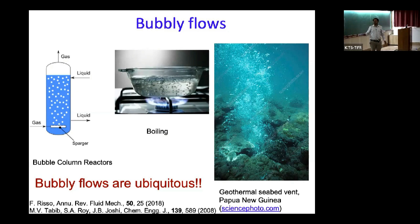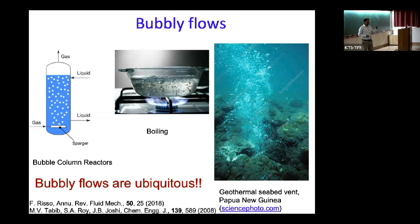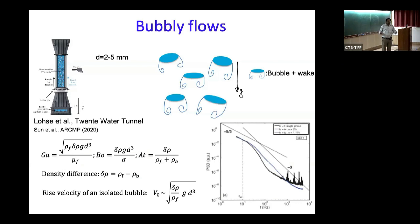You could ask a very simple question: what is the statistics of the flow fluctuations in such a scenario? Is it similar to grid turbulence or different? Naively, one could think of these bubbles as solid particles moving through the fluid—if they're large enough, they generate turbulent wakes, like a moving grid, producing homogeneous isotropic turbulence. That's what we felt, but we were wrong.